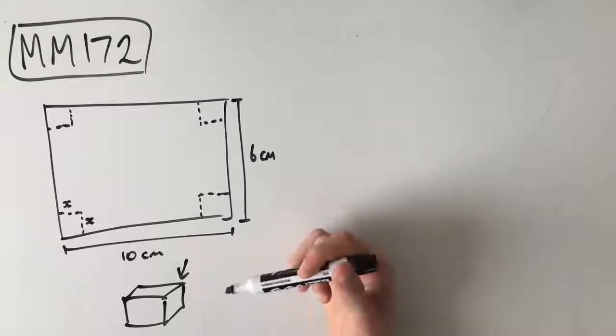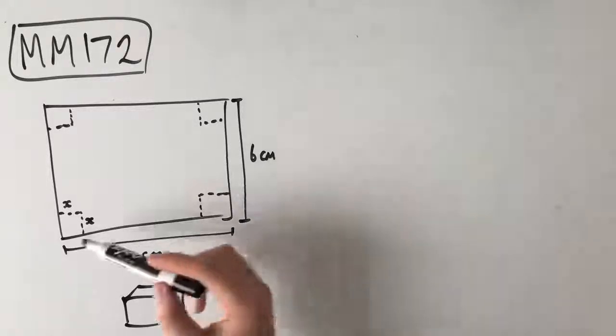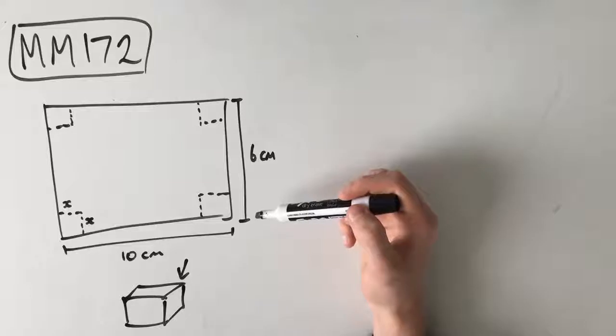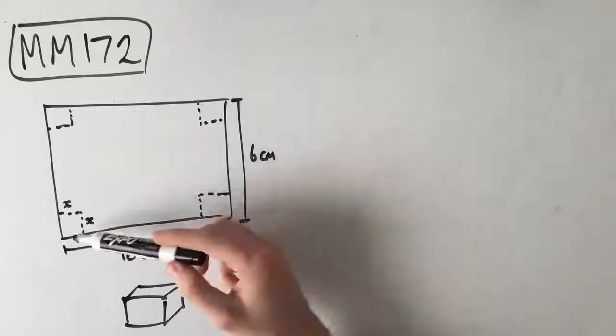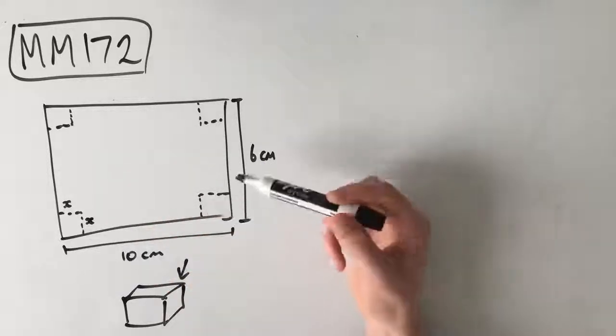So we've got this question that says, Christian has a rectangular piece of cardboard that is 10cm long and 6cm wide. Christian cuts squares of side length xcm from each of the corners of the cardboard, as shown in the diagram below.